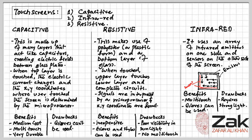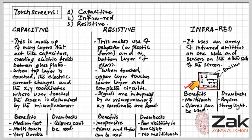Infrared touch screens are no longer used in general — its use is now very rare. It uses an array of infrared emitters on one side and sensors on the other side of the screen. When the emitters emit infrared and you place your finger on the screen, the infrared signals do not reach the sensors, and the sensors work out the position of the touch. The benefits are multi-touch support and gloves can also be used; the drawback is it requires strong sunlight and is mostly light-dependent.